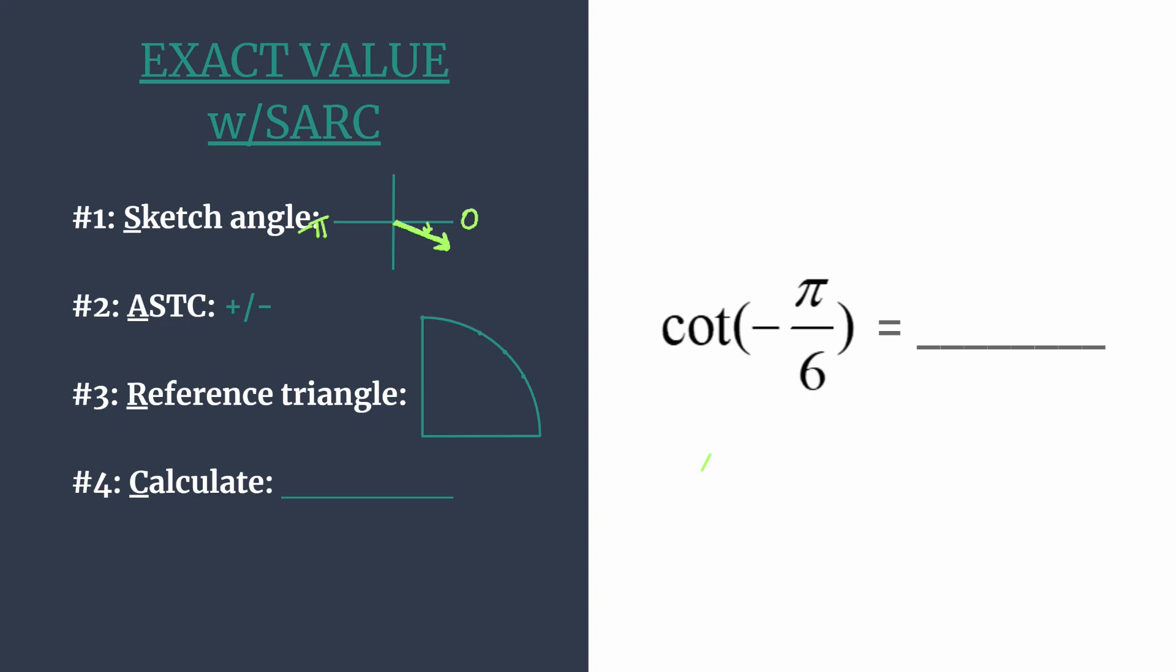So we are ready now to move on to step 2. The A helps us remember to think ASTC. And that's just the acronym, so that we can decide which trig functions are positive or negative in each quadrant. And we really just care about the fourth quadrant here.